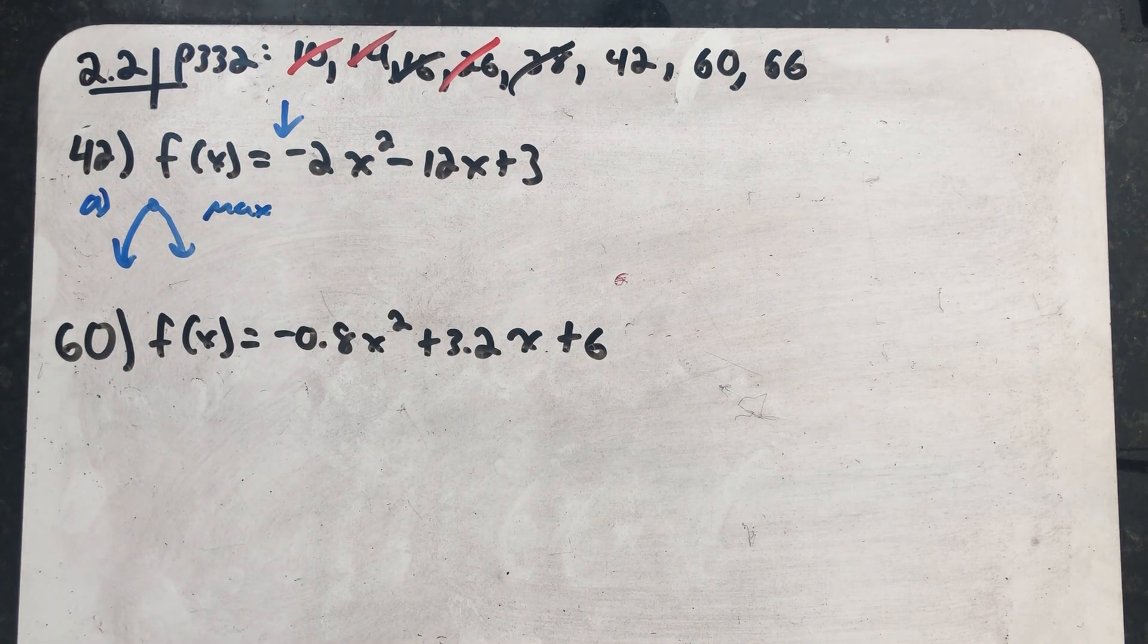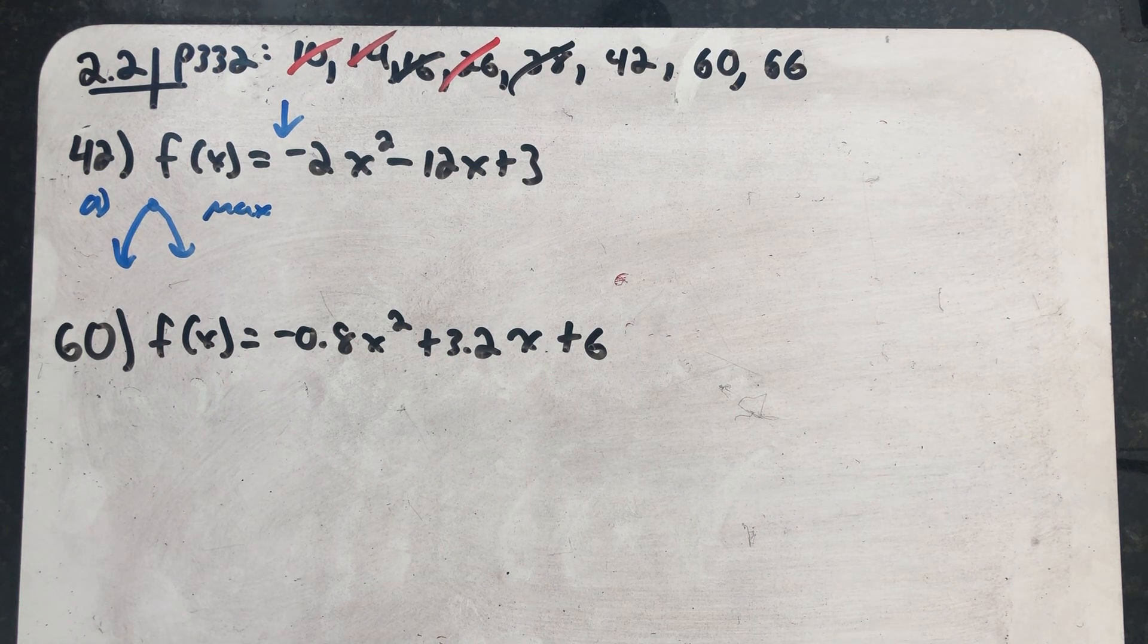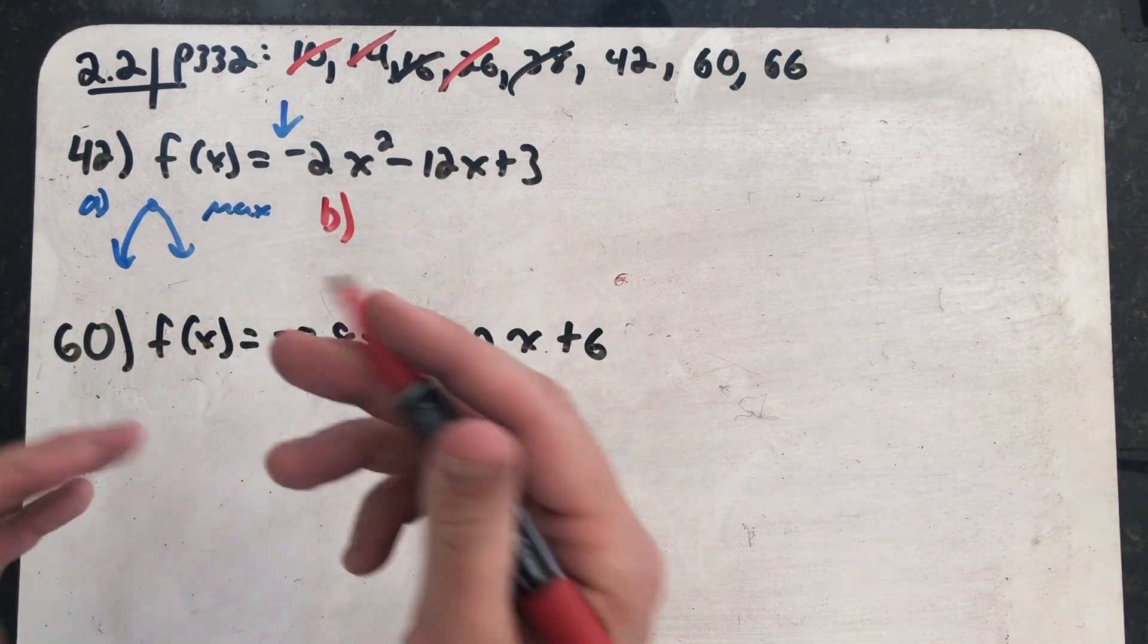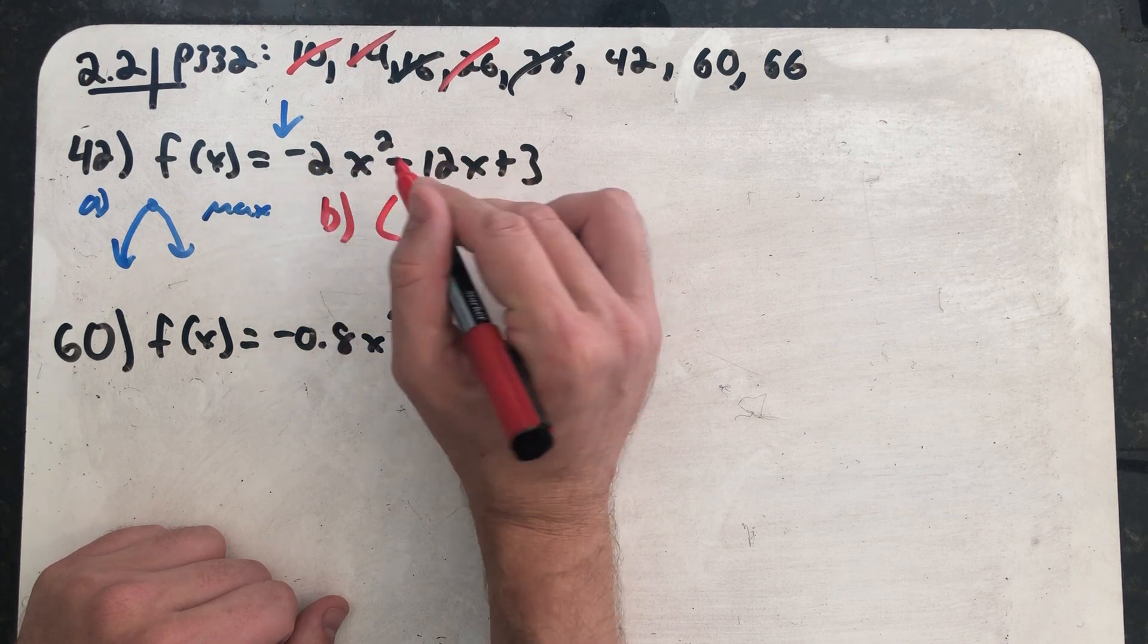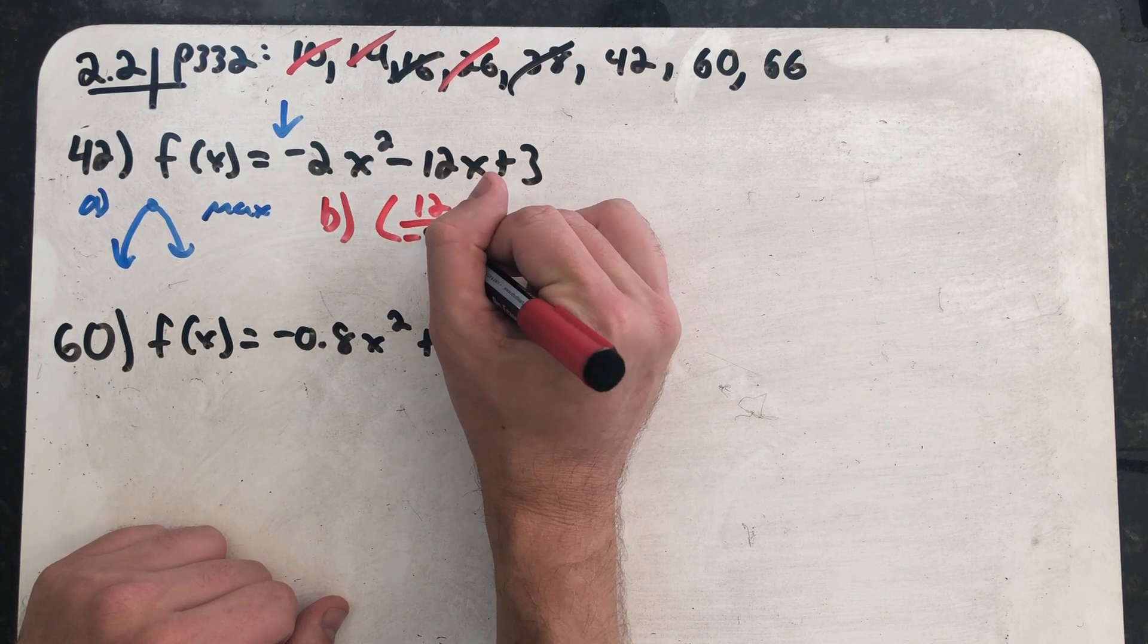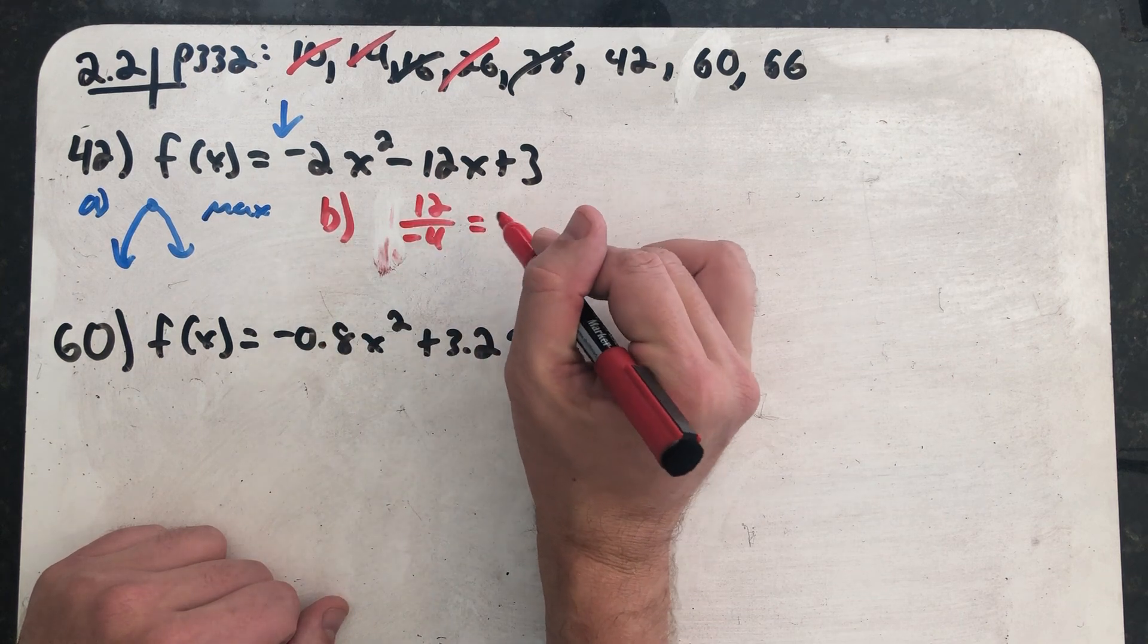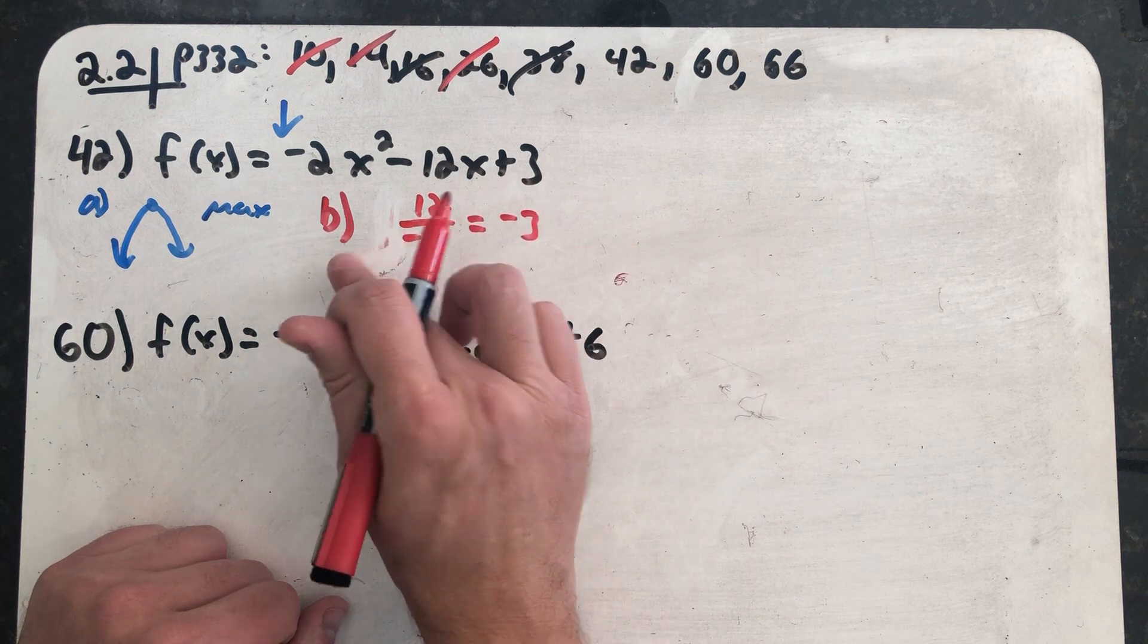The maximum will be the y-coordinate of the vertex, and it will occur at the x-coordinate. So let's find that max. Opposite of B is 12, all over 2A is minus 4. So that x-coordinate of the vertex is going to be at minus 3. That's where the max will occur.